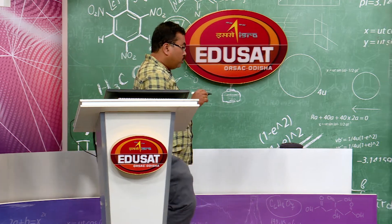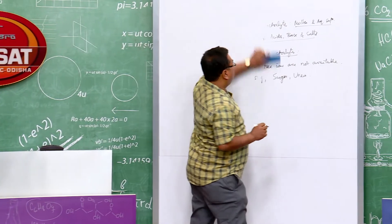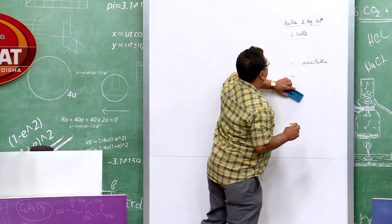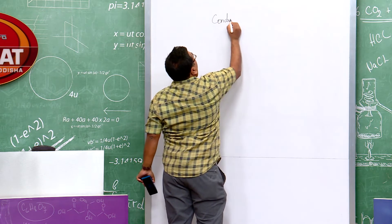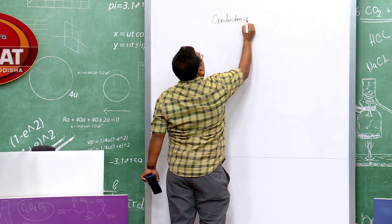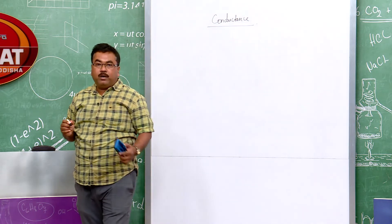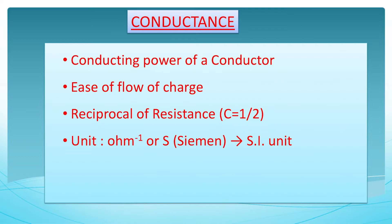The most important aspect of this chapter is the term conductance. The literal meaning of conductance is the ease with which a conductor can carry current or electricity — that is, when resistance for the flow of charge is minimum.